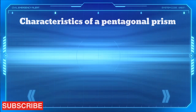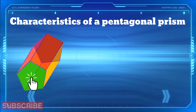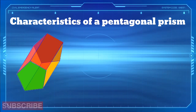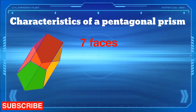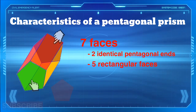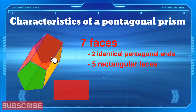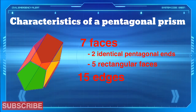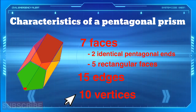Characteristics of a pentagonal prism. A pentagonal prism has 7 faces with 2 identical pentagonal ends and 5 rectangular faces. It has 15 edges and 10 vertices.